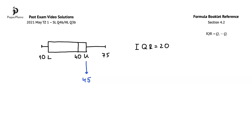To find L, we'll use this equation from section 4.2 of the formula booklet, where IQR is the interquartile range, Q3 is the upper quartile, and Q1 is the lower quartile.